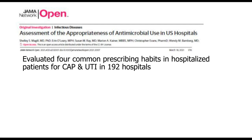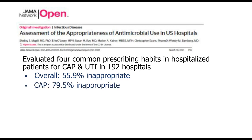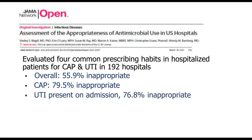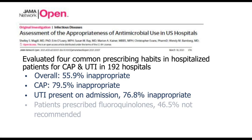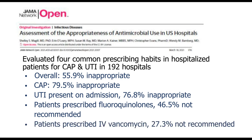A paper published this year looked at common prescribing habits in hospitalized patients with upper and lower respiratory tract infections across 192 hospitals. Overall, 55.9% — roughly 60% — of antimicrobial use was considered inappropriate. For community-acquired pneumonia, it was almost 80% inappropriate. Urinary tract infection on admission was 76.8% inappropriate. Patients prescribed fluoroquinolones were 46.5% not recommended, and patients prescribed IV vancomycin were 27.3% not recommended.